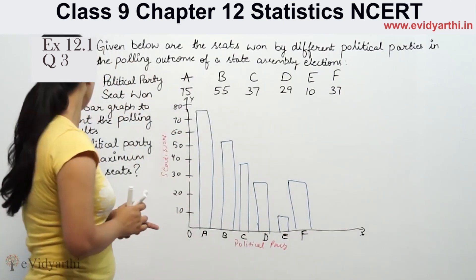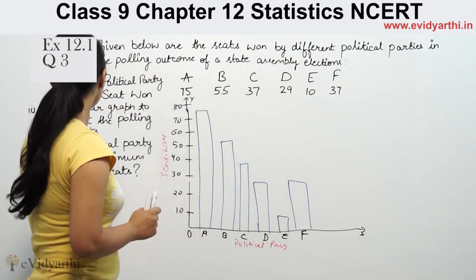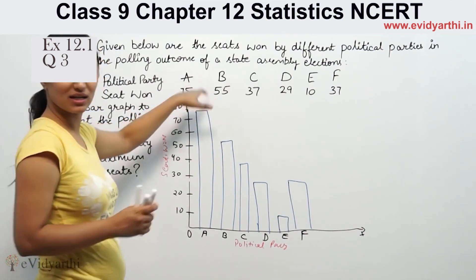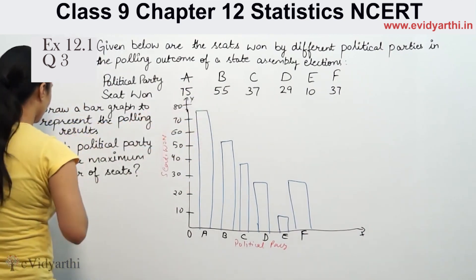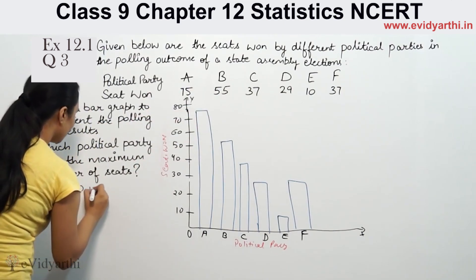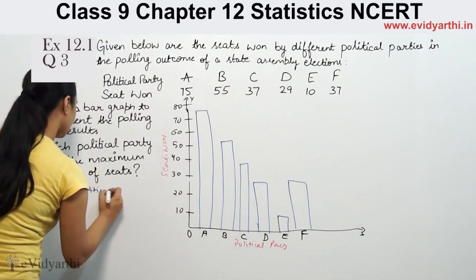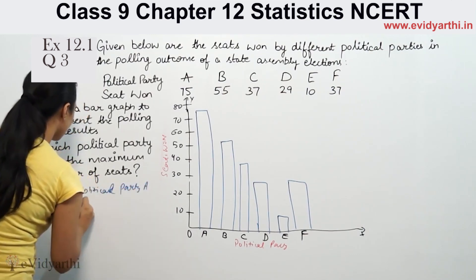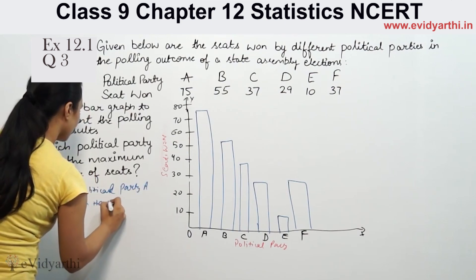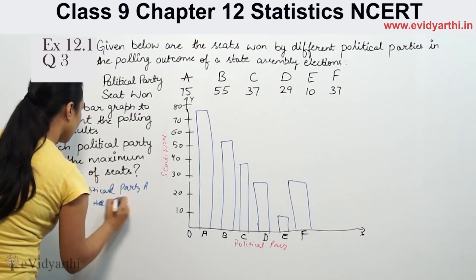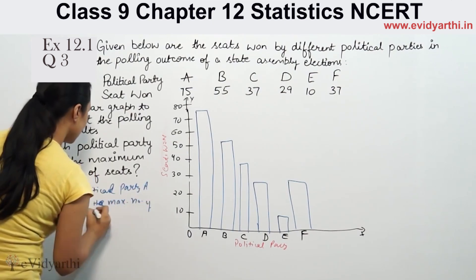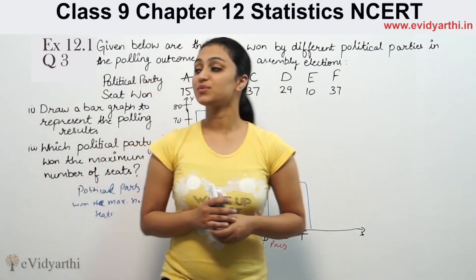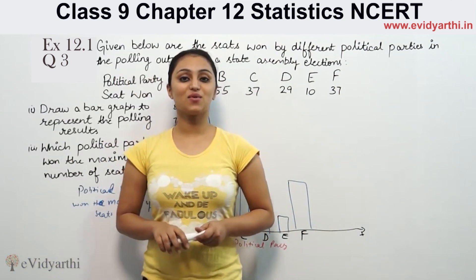So this is the bar graph. Keep being careful about which vertical bar is at the maximum number of seats. The maximum seats means here — this is vertical bar A with the maximum number of seats. So this was question number 3 from exercise 14.3.